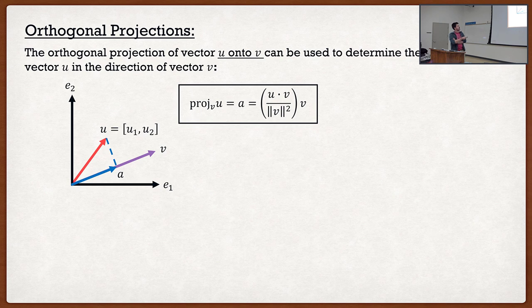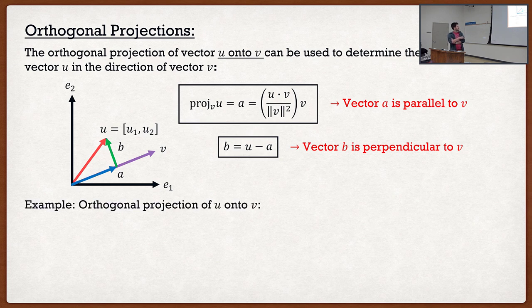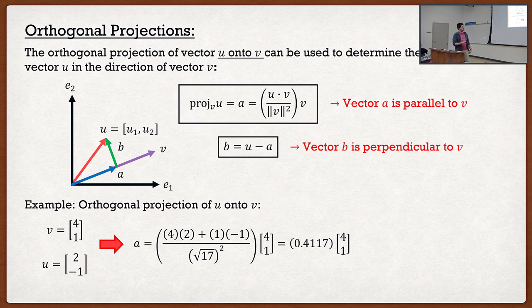The projection of vector U onto V is equal to U dot V divided by the magnitude of V squared, multiplied by V itself. This vector A is parallel with V. If I wanted the perpendicular component, since we form a nice triangle, I just go U minus A. Please be careful of the wording — projection of U onto V versus V onto U will change the formula. The first part of the formula is a scalar, multiplied by a vector, giving a vector result.